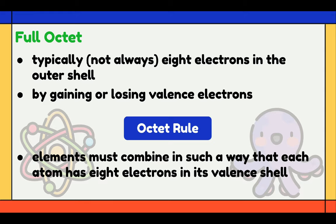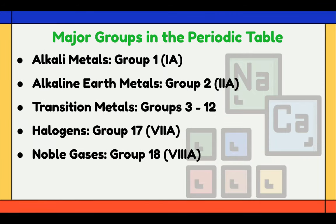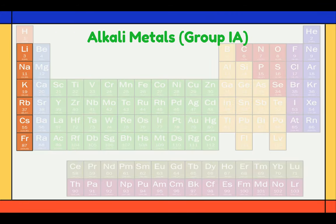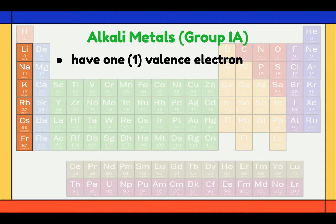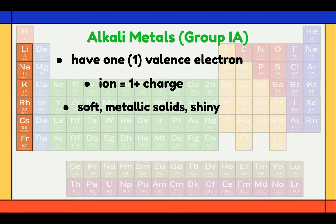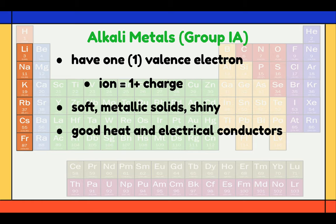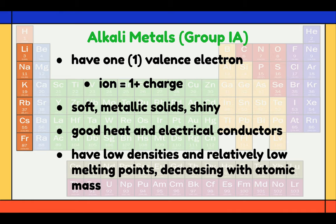There are 5 major groups in the periodic table. First, we have the alkali metals, or Group 1A. Elements in this group have 1 valence electron that they will give up easily to get an octet, so the ion form of these elements has a positive 1 charge. They are soft metallic solids that are shiny, and they are good heat and electrical conductors, with low densities and relatively low melting points, which decreases with atomic mass.